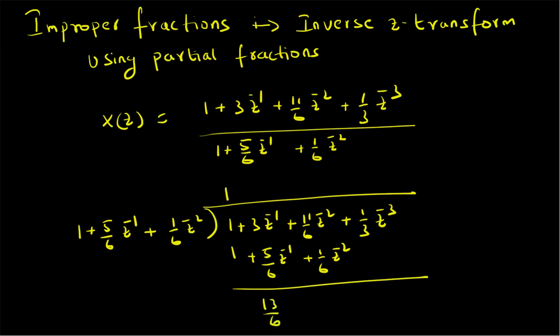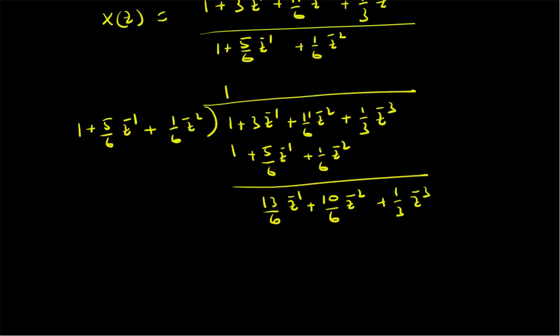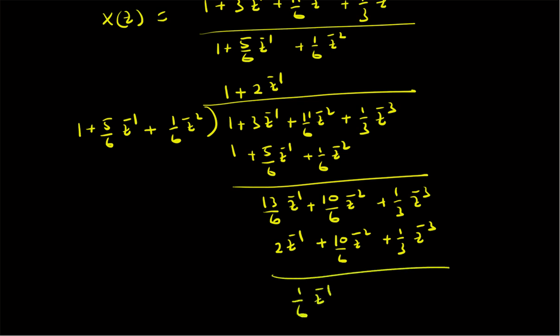The remainder so far is (13/6)z⁻¹ plus (10/6)z⁻² plus (1/3)z⁻³. To get a proper fraction, we need to eliminate the higher powers z⁻² and z⁻³. We use 2z⁻¹ as the next quotient term, giving 2z⁻¹ plus (10/6)z⁻² plus (1/3)z⁻³. Fortunately, this eliminates both z⁻² and z⁻³, leaving only (1/6)z⁻¹ — since 13/6 minus 2 equals 1/6.